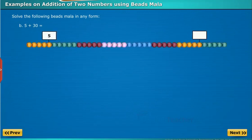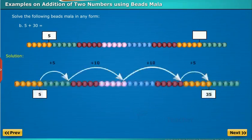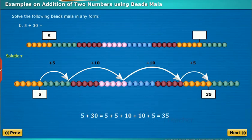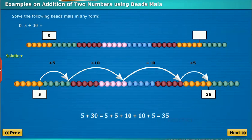Solve 5 plus 30. Here, first we have to count the beads up to the number 5. For the number 30, count the remaining beads in the form of 10s and 1s. So, we get 5 ones, 2 tens and 5 ones. After counting all the beads, let us now add them. The result is 35.